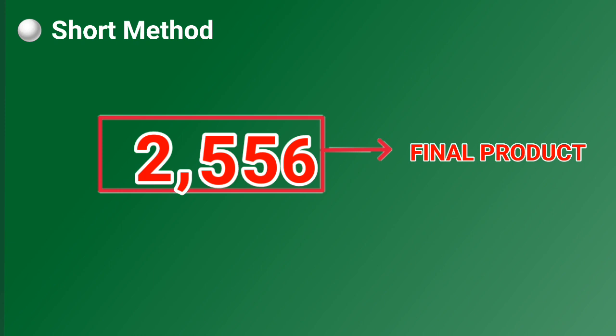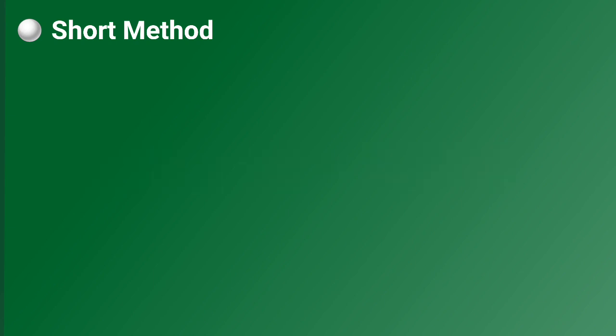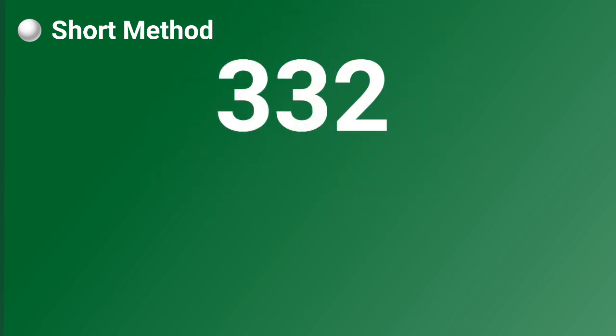So, two hundred thirteen times twelve is two thousand five hundred fifty-six.